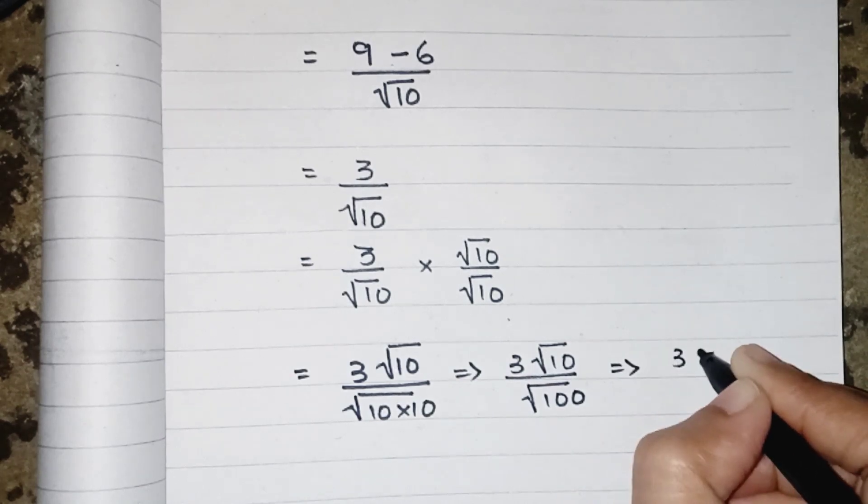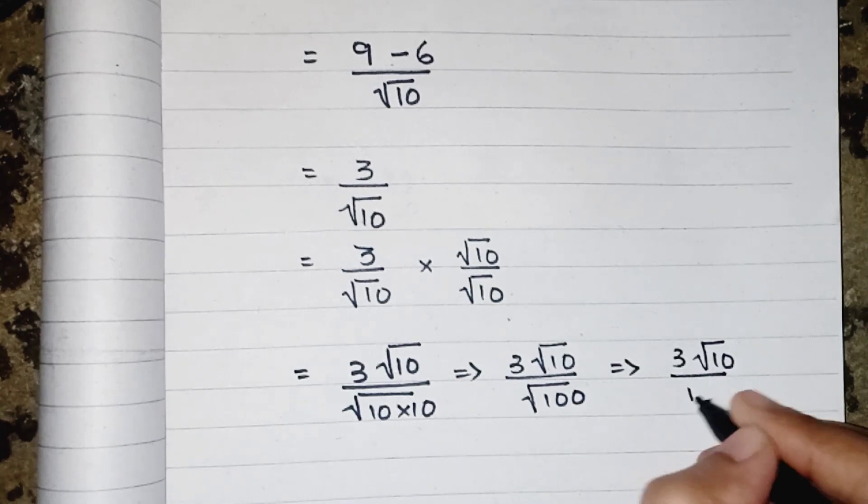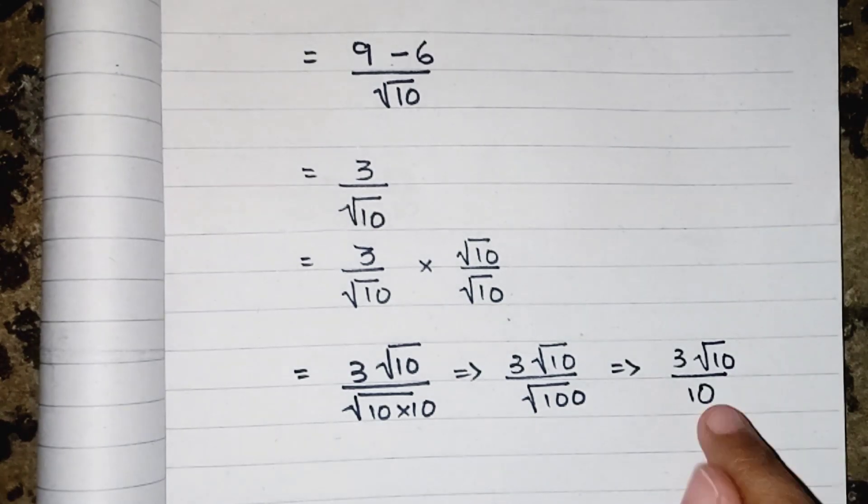Or you can say that it will be equivalent to 3 root 10 upon 10. We cannot cancel out the root 10 and root 10 because this one is inside the root and this one was not having the root.